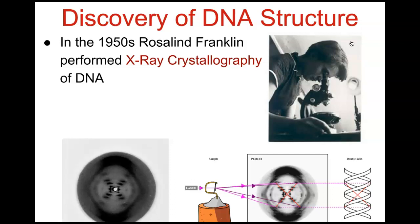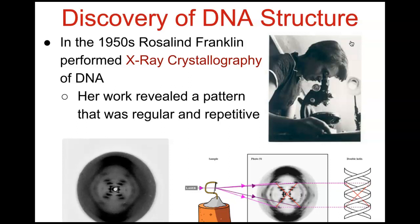Some structures when they solidify form crystals, and in chemistry when you form crystals and pass a light source or laser beam through them, you get refraction. Her X-ray crystallography of DNA showed a pattern that was regular and repetitive, ultimately illustrating that DNA was indeed a double helix. You could see how passing the laser beam through produced the refraction — this is what her photograph looked like, and comparing it to the DNA molecule you could see the spiraling of the double helix.